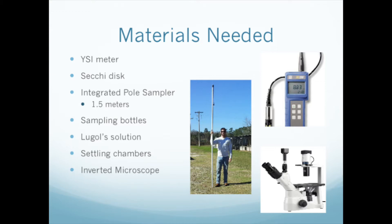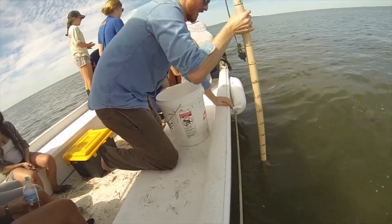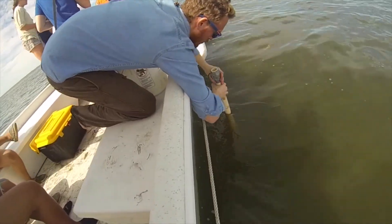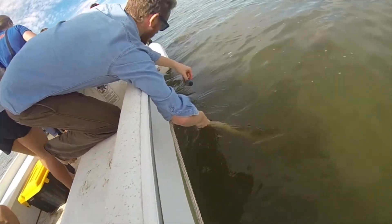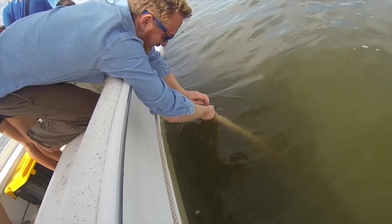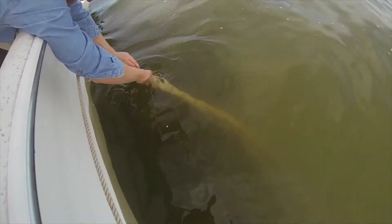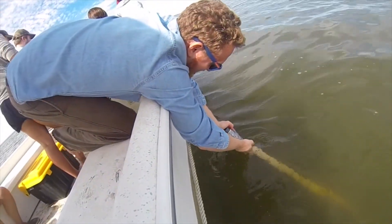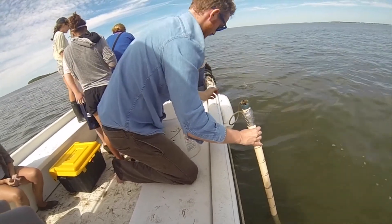Often, it is beneficial to compare phytoplankton samples from different locations in order to determine which species are present in each, and even where blooms are likely to occur around the world. We collected water samples from Seahorse Key in order to observe phytoplankton species present in the area. The first of the materials needed for these collections is an integrated pole sampler. Here you can see how an integrated pole sampler is used — it is very similar to a drinking straw in that you have to make sure it is sealed at one end when it is pulled out of the water.